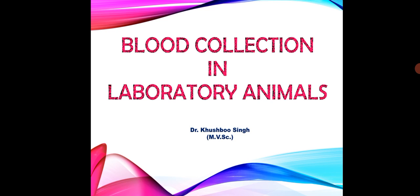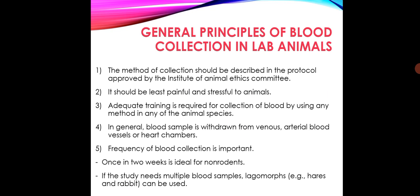Blood collection in laboratory animals. General principles of blood collection in laboratory animals include: the method of collection should be described in the protocol approved by the Institute of Animal Ethics Committee. It should be least painful and stressful to animals. Adequate training is required for collection of blood by using any method in any of the animal species.